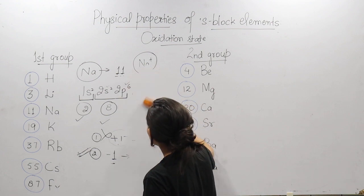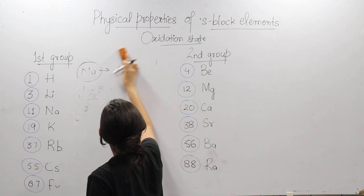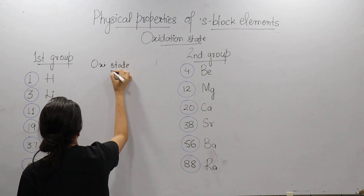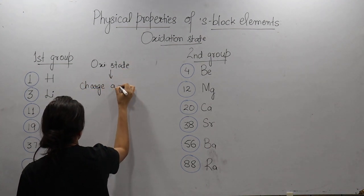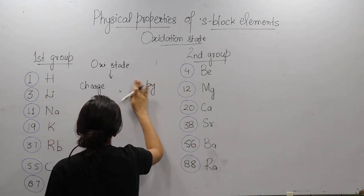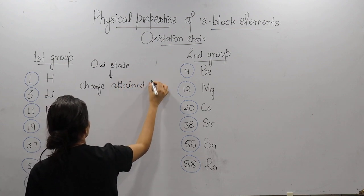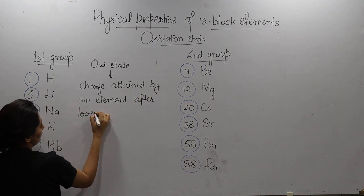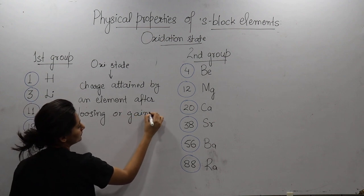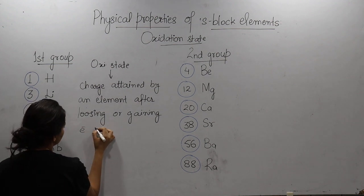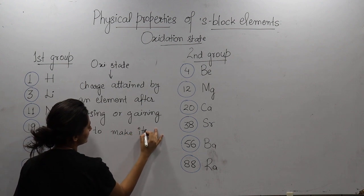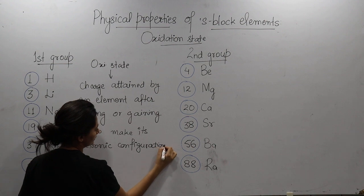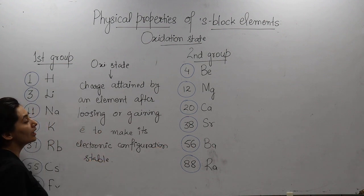After seeing this example, how do we define oxidation state? We can define oxidation state as the charge acquired — or attained — by an atom after losing or gaining electrons to achieve a stable electronic configuration. So the oxidation state tells us how many electrons an atom loses or gains, and what charge that atom attains. You can note this definition.